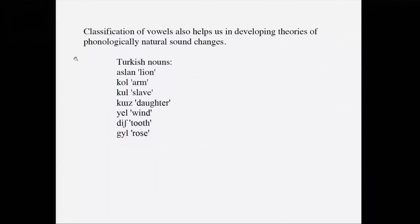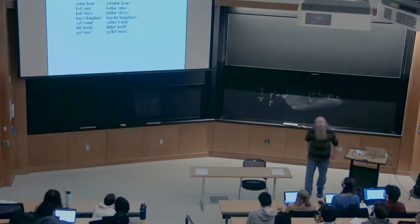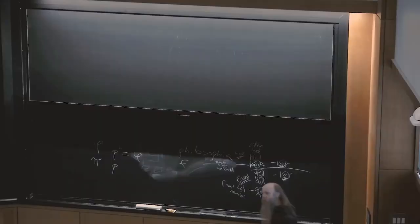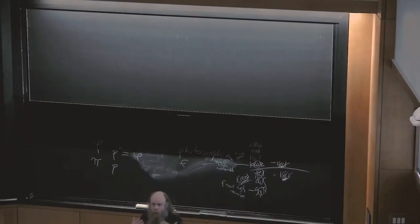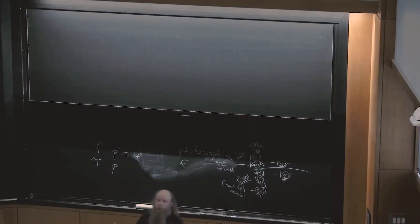Some of you who have read C.S. Lewis might recognize the first one — 'aslan'. Here are the plurals of these Turkish nouns. The plural suffix is '-lar', as in the words for lions, arms, slaves, and daughters. But for winds, teeth, and roses we get '-ler' — for 'yel', 'diş', and 'gül' we get '-ler', and for 'aslan', 'kol', 'kul', and 'kuz' we get '-lar'.